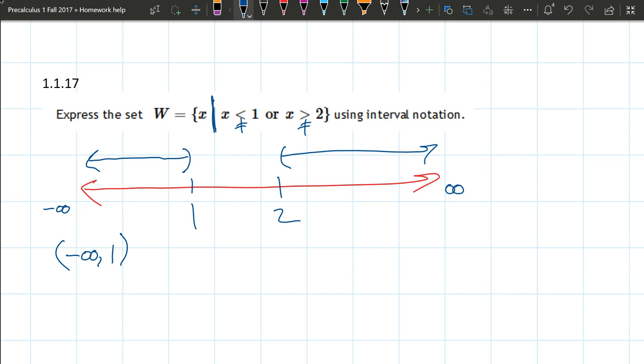Now the second interval here is going to start at 2, go to infinity. You never actually hit infinity, so it's always a parenthesis. And for us, you're not equal to 2, so it's also a parenthesis there. So this is our answer in interval notation.